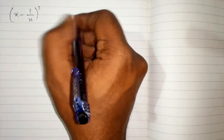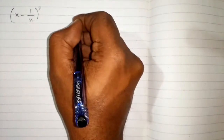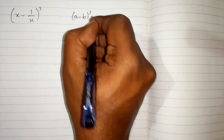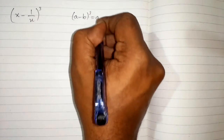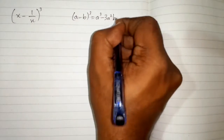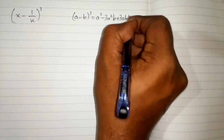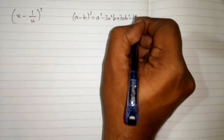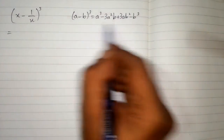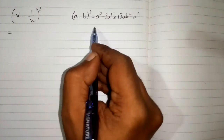In this video we will find the cube of x minus 1 upon x. We will use an algebraic identity which is: a minus b whole cube is equal to a cube minus 3a squared b plus 3ab squared minus b cube. First we will write the structure of this formula, putting brackets in place of a and b.